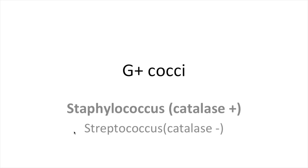This video is going to be on gram-positive cocci bacteria. There are two different types we're going to cover. This lecture is only going to cover Staphylococcus, but the two gram-positive cocci are Staphylococcus and, in the next video, Streptococcus. The main way you distinguish between these two bugs is by a catalase test. Staphylococcus is catalase positive and Streptococcus is catalase negative.